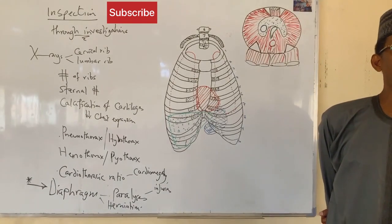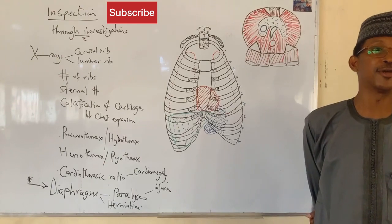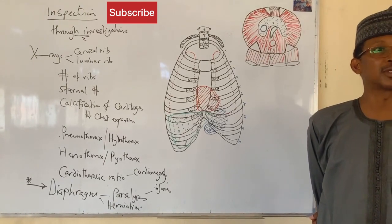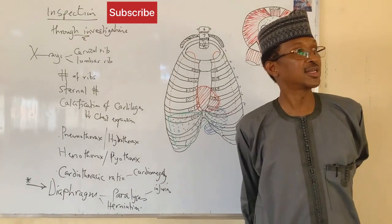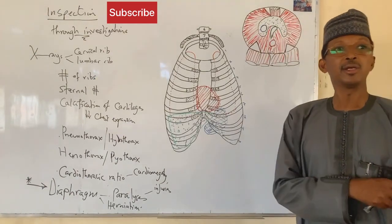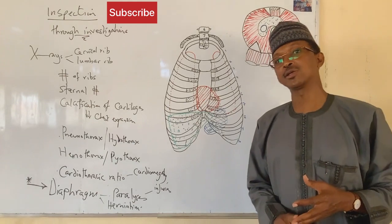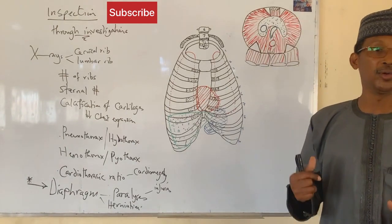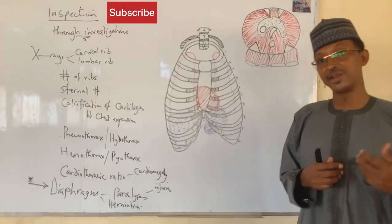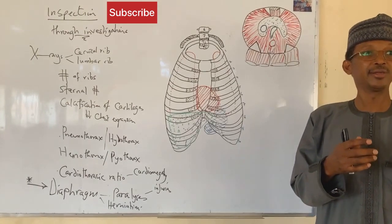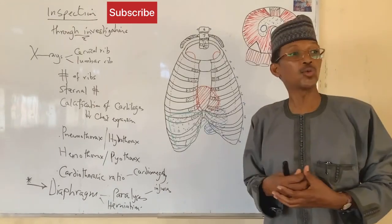I'm going to continue from where I stopped in the previous video. I discussed the inspection of the chest. If you remember, I said clearly that if you want to examine a chest, there are four different methods: inspection, percussion, palpation, and auscultation. Last lecture I stopped at physical inspection of the chest, where I discussed different conditions you can inspect with your naked eyes, either congenital or acquired conditions.